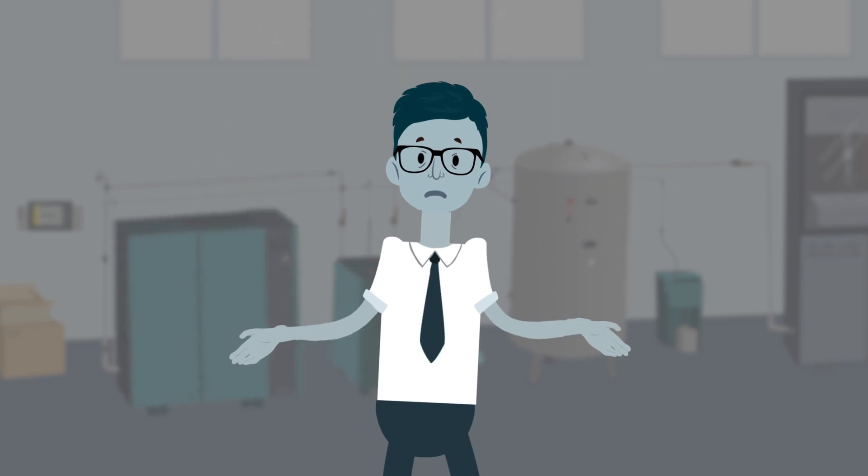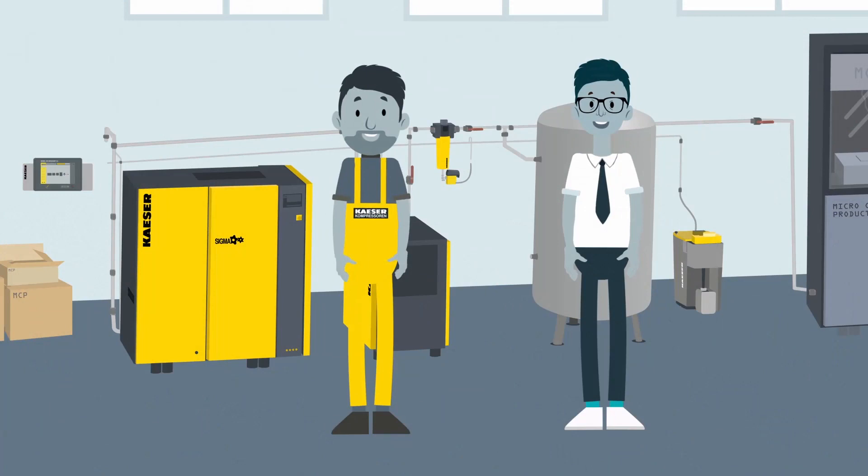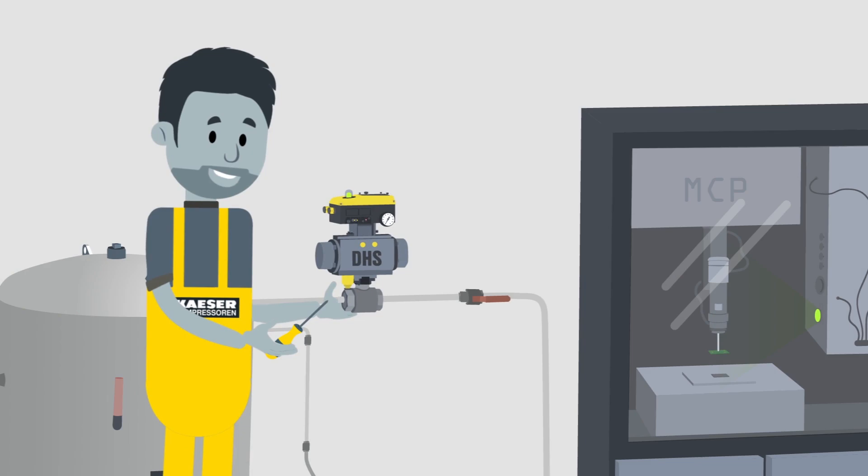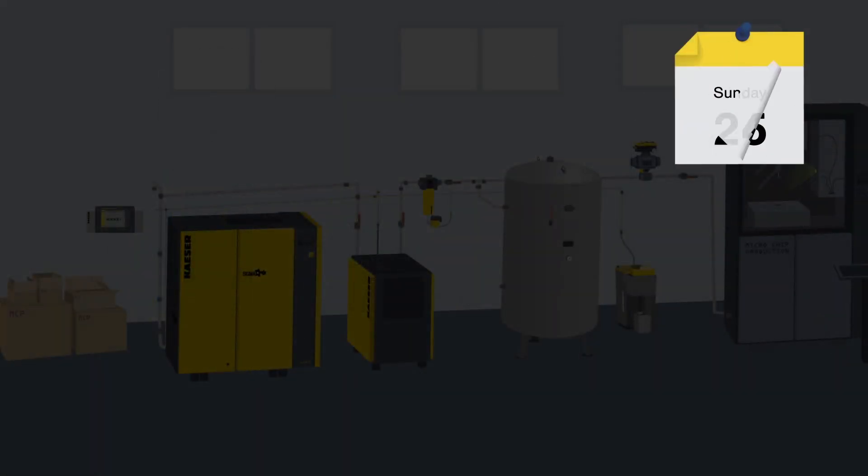This can actually happen. But with a DHS Air Main Charging System from Kayser Compressoren, you are always on the safe side. It assures optimal flow speed of the compressed air in your system,